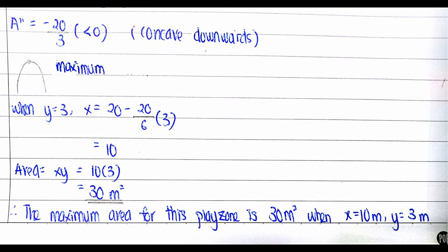So when y equals to 3m, we substitute it into the x equation and we get the value of x equals to 10. Thus, the area equals to x times y, which is 10 times 3. So finally, the area equals to 30m². The maximum area for this play zone is 30m² when x equals 10m and y equals 3m. Thank you.